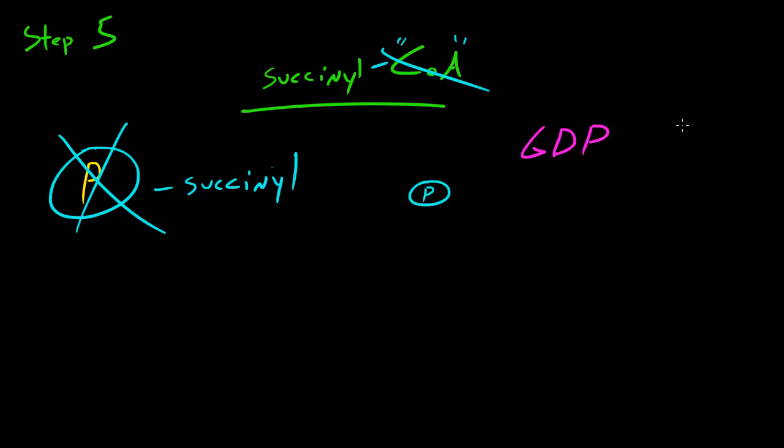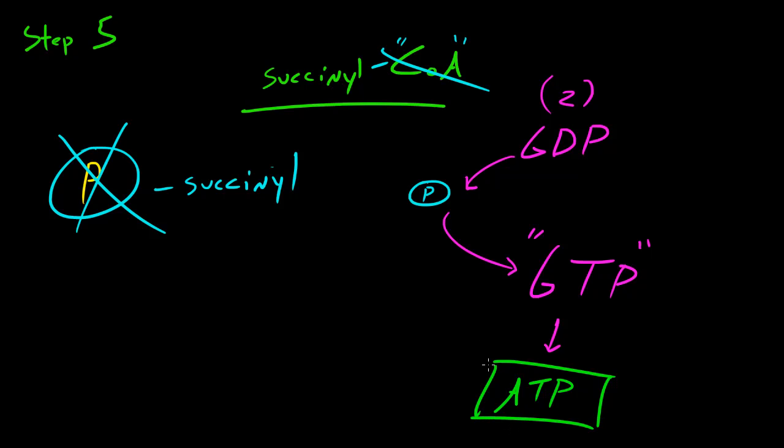Now, if you remember, ADP meant it had two phosphates, GDP also has two phosphates, so when it combines with this phosphate that came from this molecule, it's going to turn into something called GTP. Now, I know I didn't talk about GDP or GTP before, but the only thing that you have to remember is that GTP can actually be used to make ATP. And of course, we know what ATP is, valuable, valuable energy in the cell.